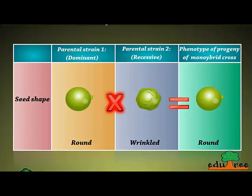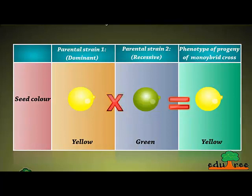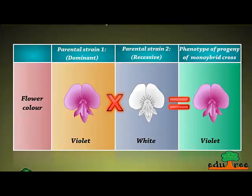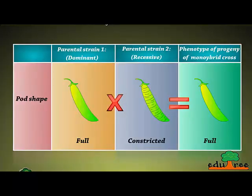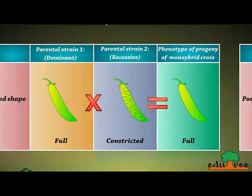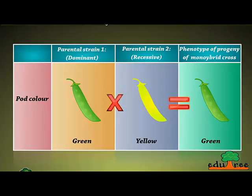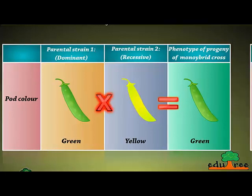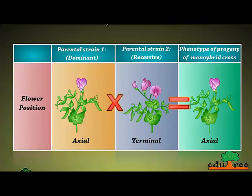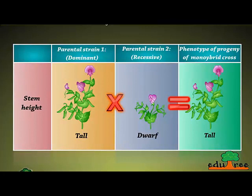Seed shape: round and wrinkled — the phenotype of progeny was round. Seed color: yellow and green — the phenotype of progeny was yellow. Flower color: violet and white — the phenotype of progeny was violet. Pod shape: full and constricted — the phenotype of progeny was full. Pod color: green and yellow — the phenotype of progeny was green. Flower position: axial and terminal — the phenotype of progeny was axial. Stem height: tall and dwarf — the phenotype of progeny was tall.